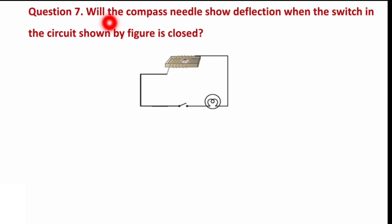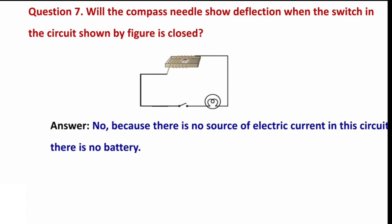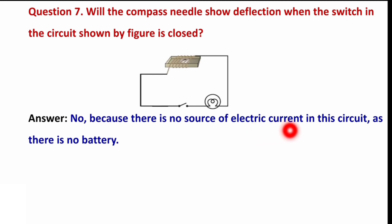Next question: will the compass needle show deflection when the switch in the circuit shown by the figure is closed? You can see the circuit here — the switch is open. If I close this switch, will the compass needle deflect? The needle will deflect only if there is current flowing in the circuit. But look at this circuit carefully. The answer is no — because there is no source of electric current in this circuit, there is no battery or cell. So current cannot flow and the needle will remain in its north-south position.